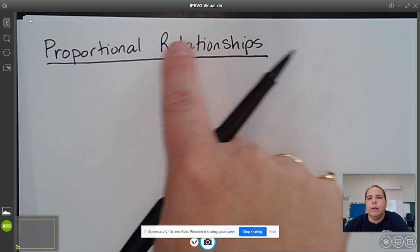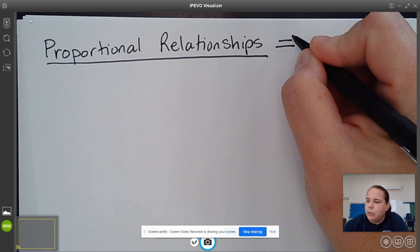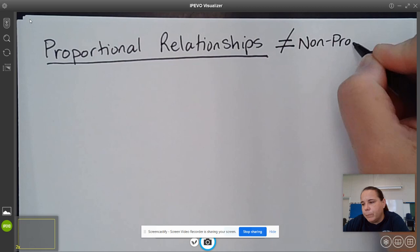But part of what we want to be able to do in eighth grade is be able to evaluate a proportional relationship, but also identify a proportional relationship. So we want to be able to tell when something is also non-proportional.